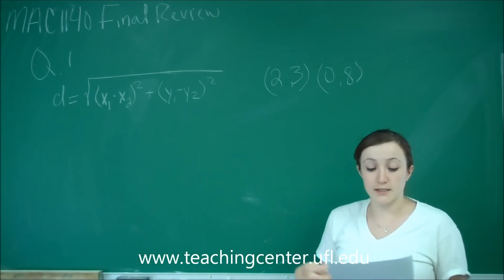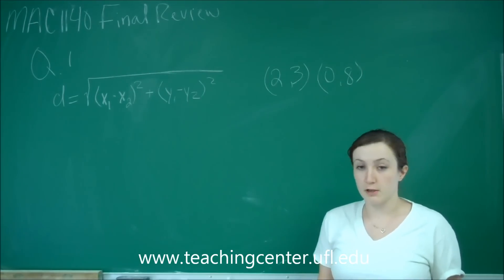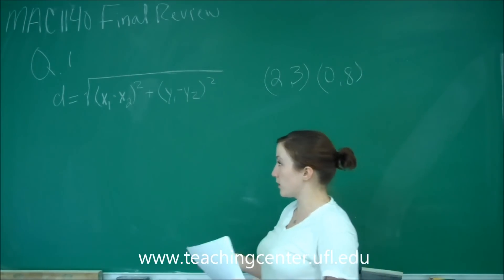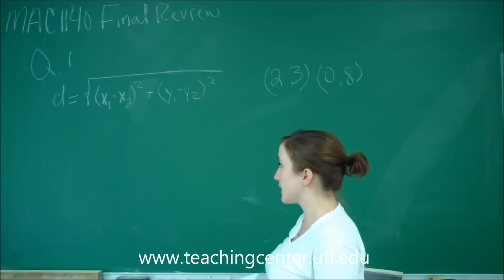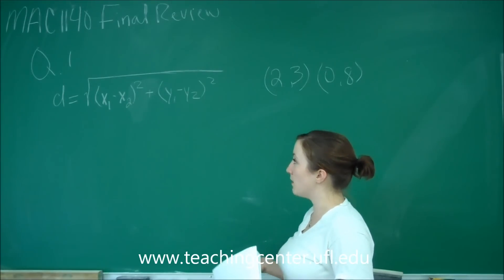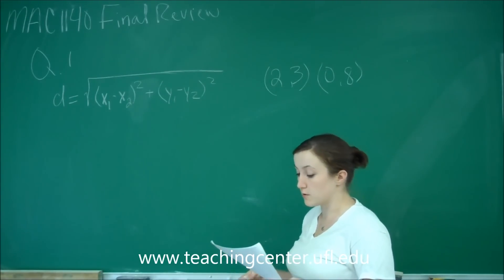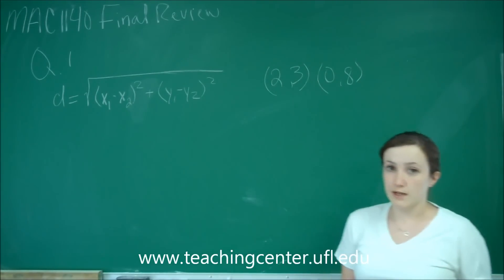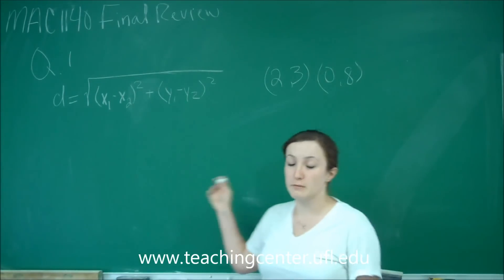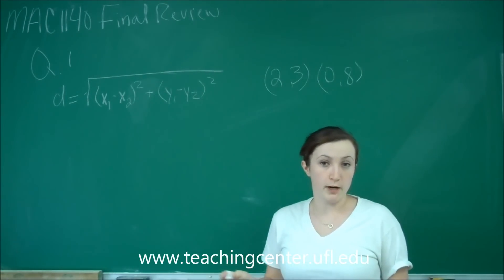It gives us, it says the distance formula between two points on a plane is d equals the square root of x sub 1 minus x sub 2 quantity squared plus y sub 1 minus y sub 2 quantity squared. So knowing that information, we want to find the distance between two points. And so this is a formula you'll probably need to memorize.